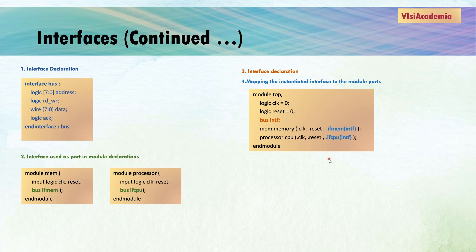One more important point here is that we are using dot name connection, but you can also use ordered connection, name connection, dot name connection, or dot star connection to connect with your interface.